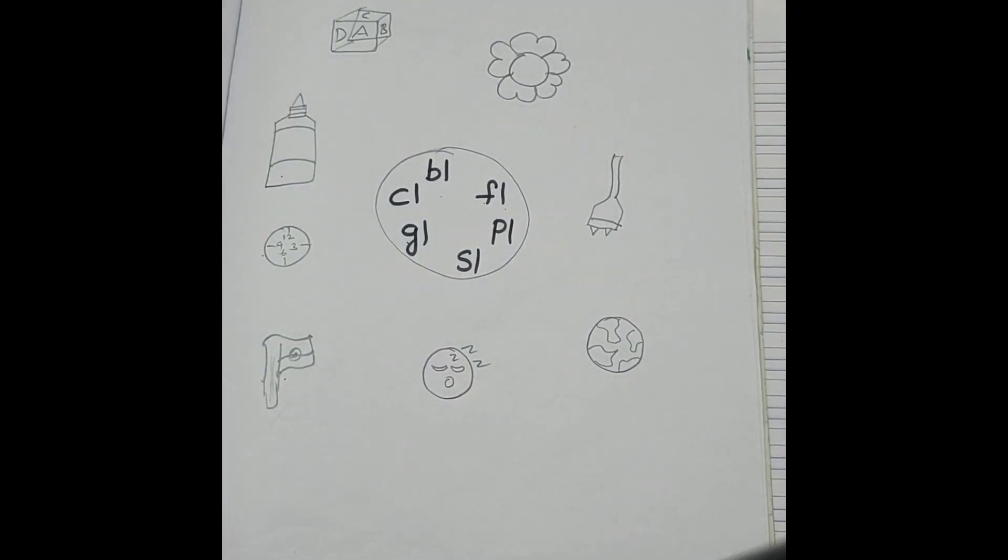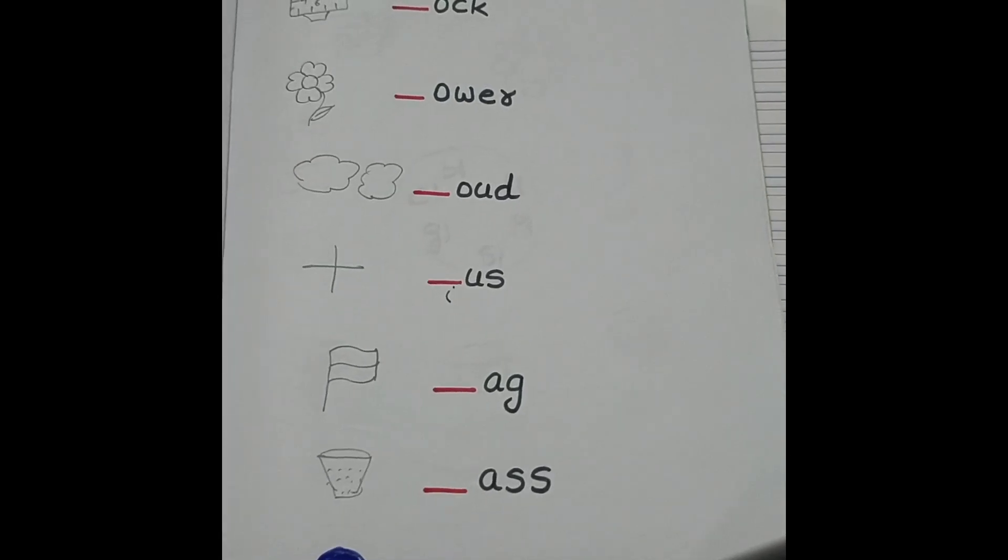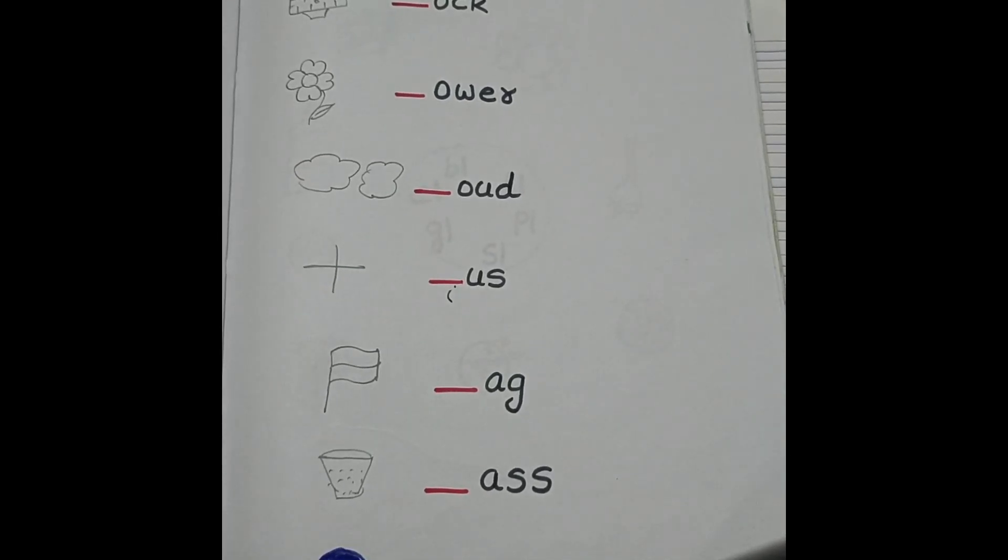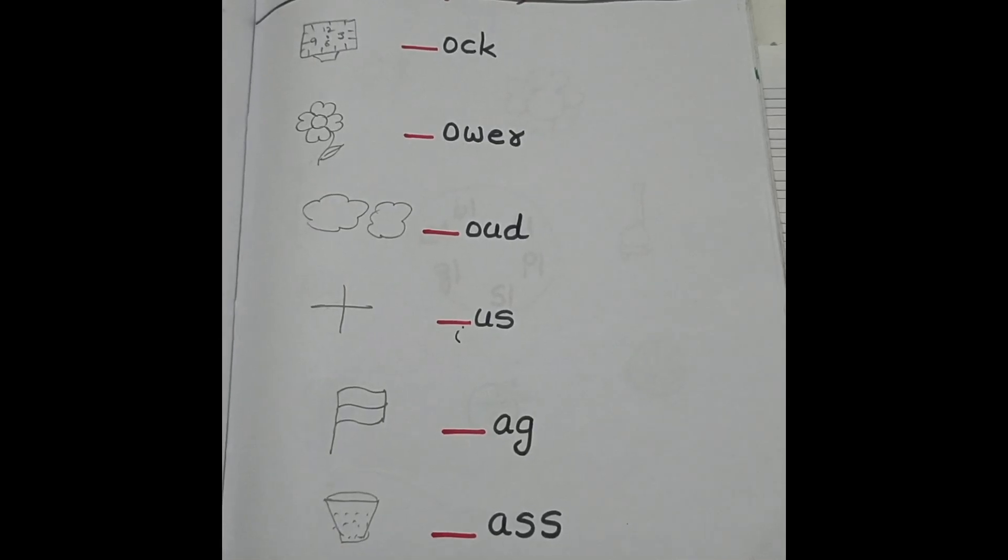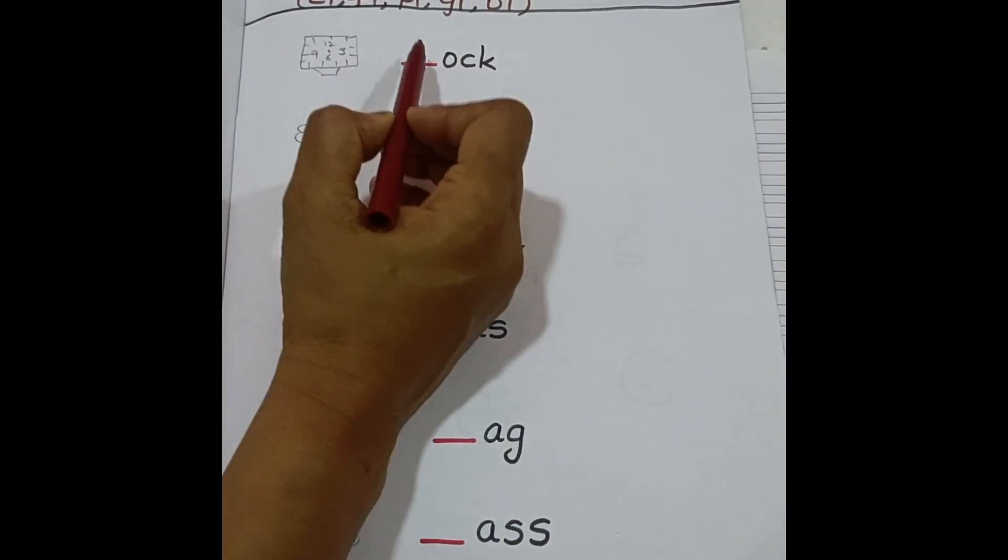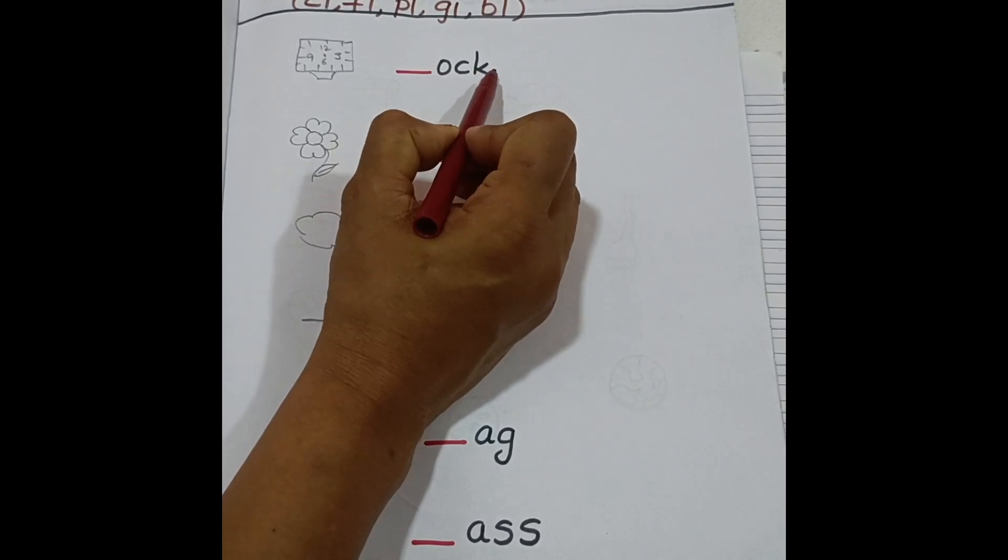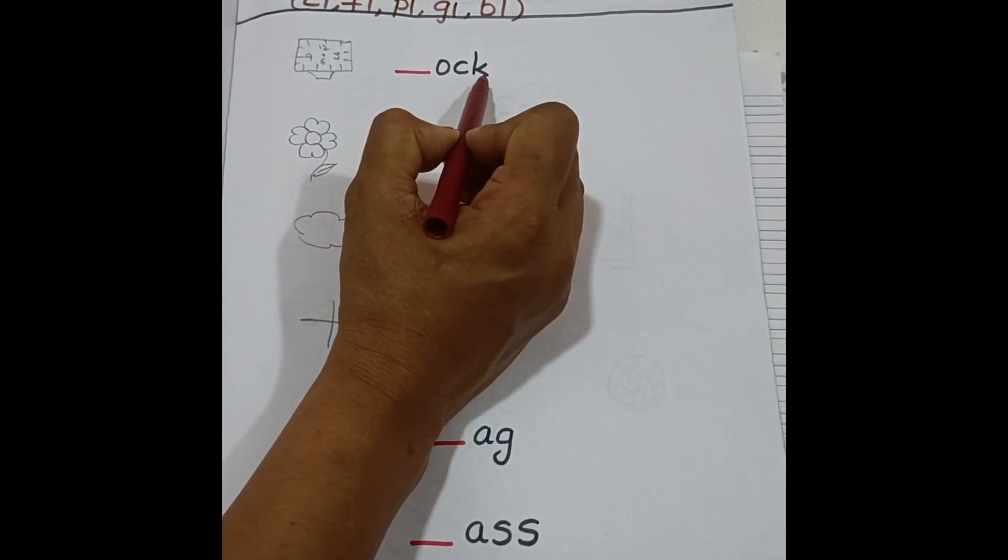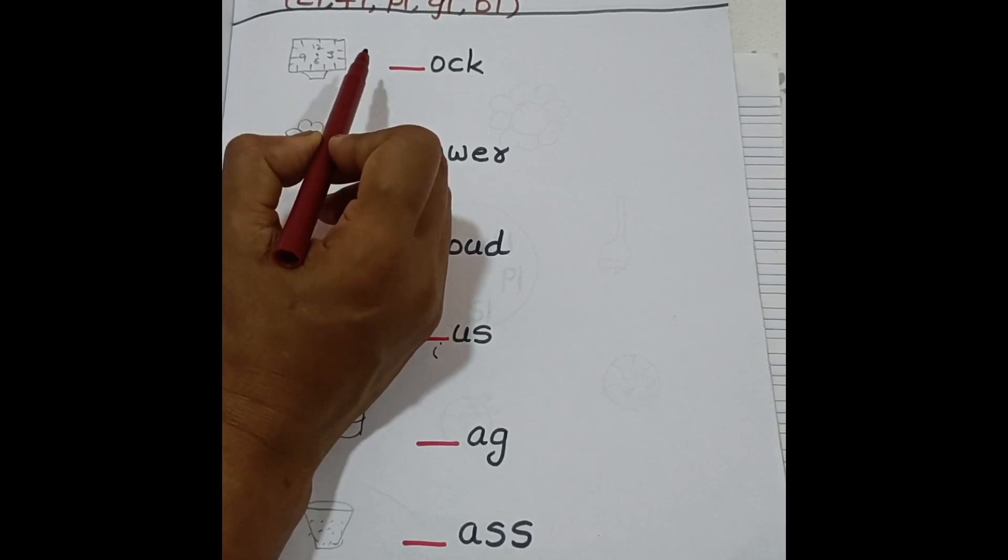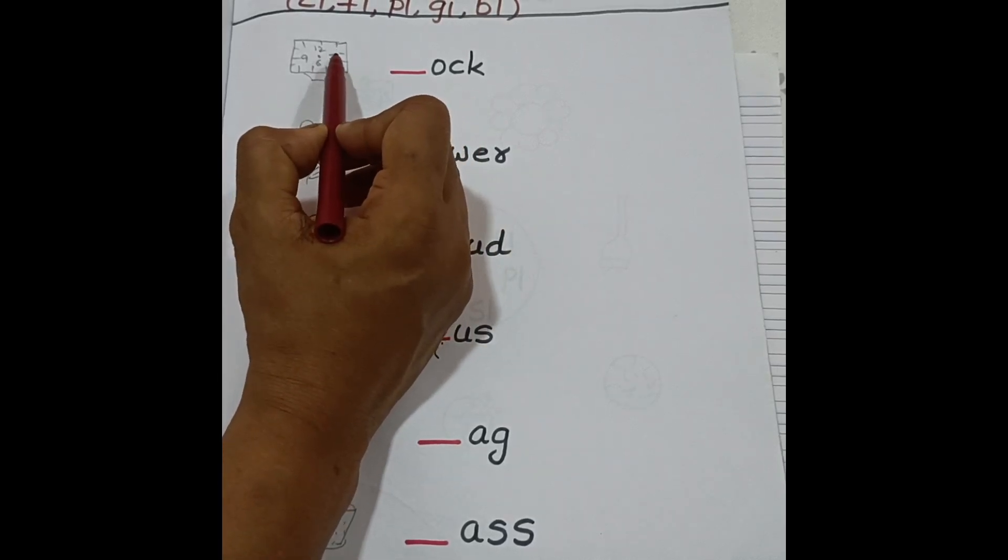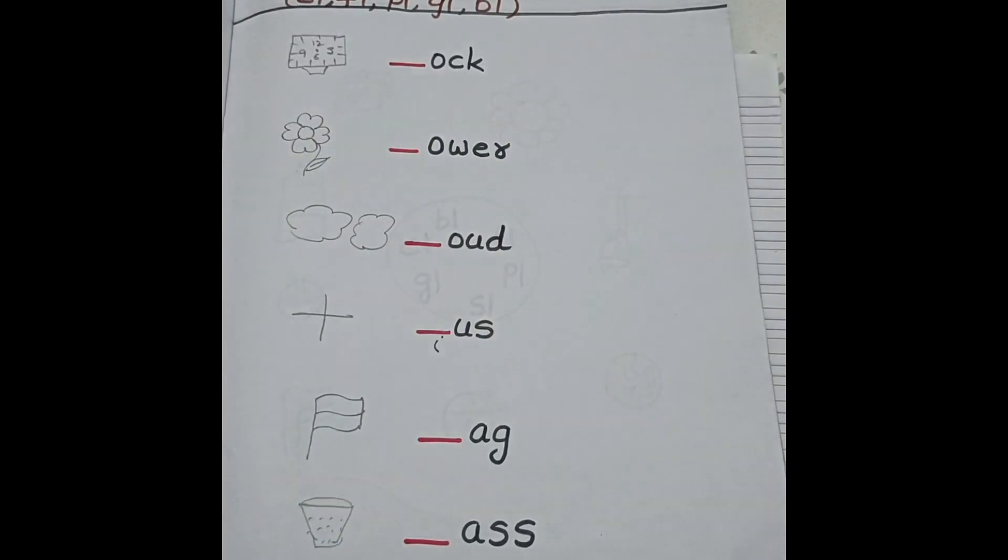And this is the worksheet one, and the second worksheet is this one. Clock. Cl, cl, clock. Cl, cl. So here, the rest of the letters I have written. Just they need to identify the beginning blends. Cl, cl, clock. C, L, sound is cl.